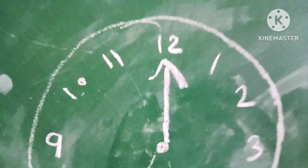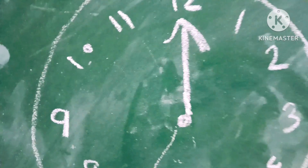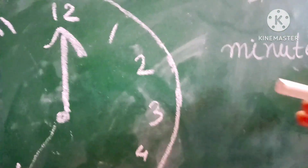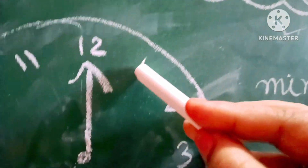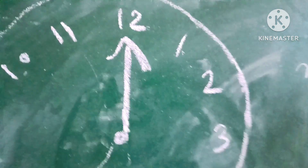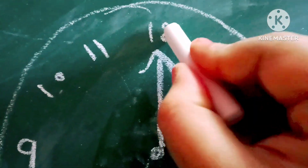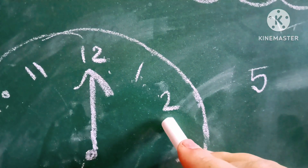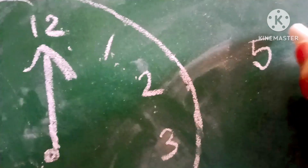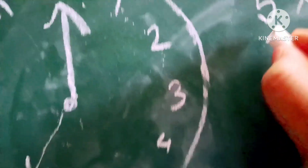On the clock there are twelve numbers: one, two, three, four, five, six, seven, eight, nine, ten, eleven, twelve. Moving from one number to the next takes five minutes. It only takes five minutes to move from one number to the next.